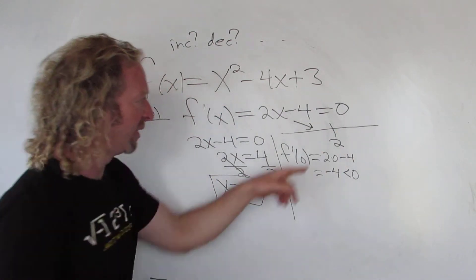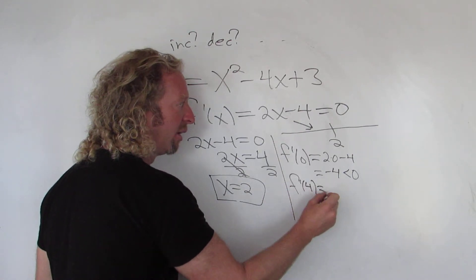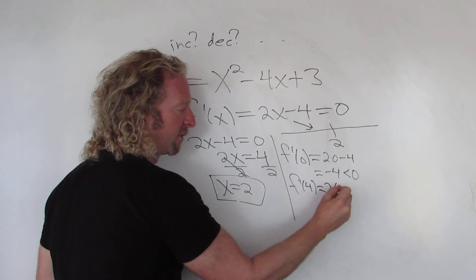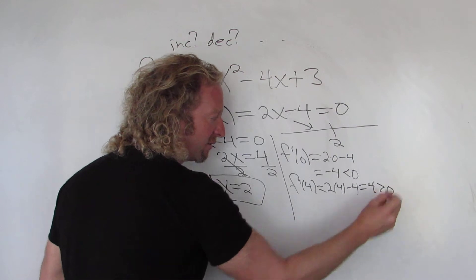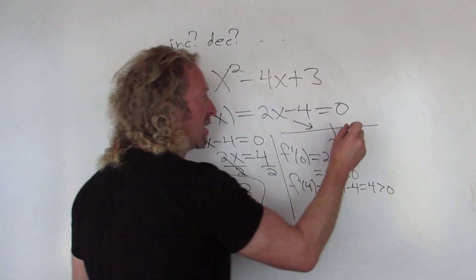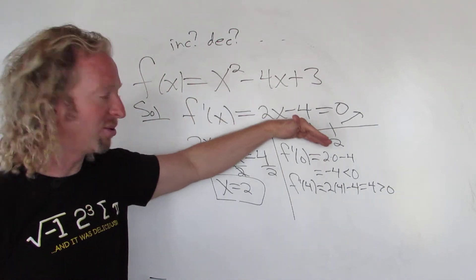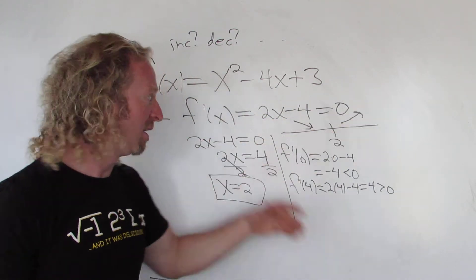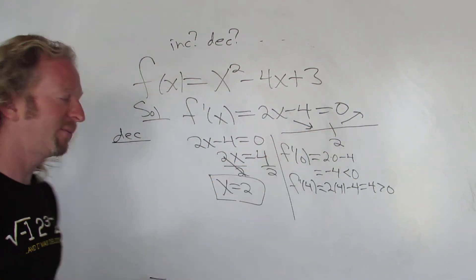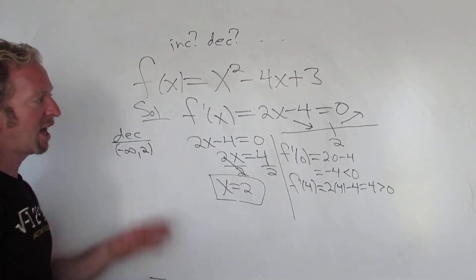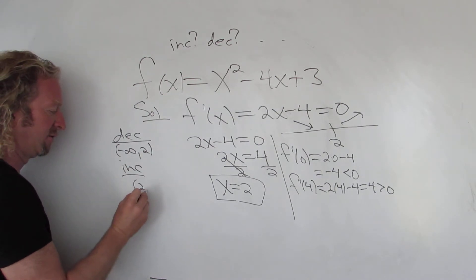Now pick another number bigger than 2 — how about 4. Plugging in 4: f′(4) = 2(4) − 4 = 8 − 4 = 4. That's positive. When you have a positive first derivative, the function is increasing. So it's decreasing all the way until it gets to 2, then it starts increasing. Decreasing: (−∞, 2). Increasing: (2, ∞). It's always a parenthesis.